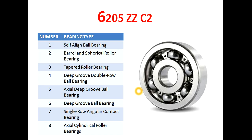The first digit of the bearing number describes its bearing type. If the first digit is 1, it describes a self-aligned ball bearing. 2 describes a barrel and spherical roller bearing. 3 describes a taper roller bearing. 4 describes a double row deep groove ball bearing. 5 describes an extra deep groove ball bearing. 6 describes a deep groove ball bearing. 7 describes a single angular contact bearing. 8 describes an axial cylindrical roller bearing.